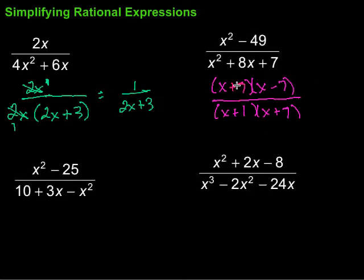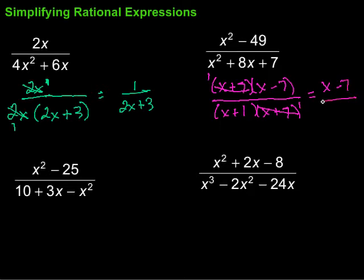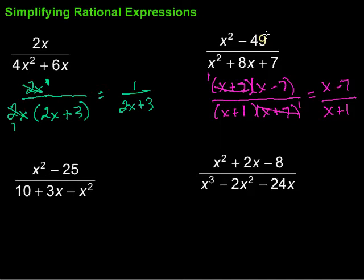Now take a look at what we've got. There's an (x + 7) on the top and also an (x + 7) on the bottom, so those can cancel out — just divide by (x + 7) on the top and bottom to simplify. That becomes 1 and 1, and we're left with x − 7 on top and x + 1 on the bottom. That's all the simplifying we can do here. Sometimes people want to simplify that x, but we can't do that because it's not being multiplied — this is addition and subtraction. So that's simplified.